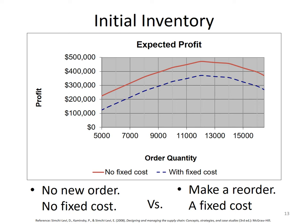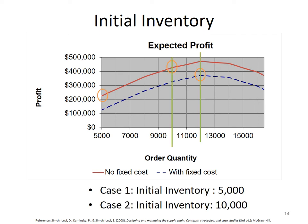If there is no order, there is no fixed cost. The motivation behind making an order is that it may increase total profit. As long as the expected increase in profit is greater than the fixed cost, we may go for a reorder. But if the increase in profit is less than the fixed cost, we should not reorder. Let's analyze two cases: Case 1 where initial inventory is 5,000, and Case 2 where initial inventory is 10,000.